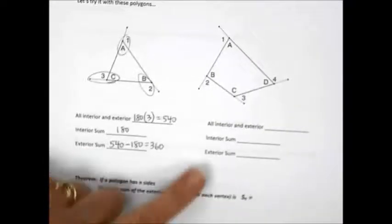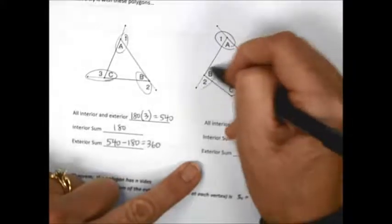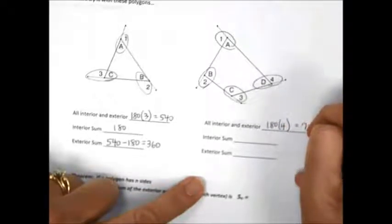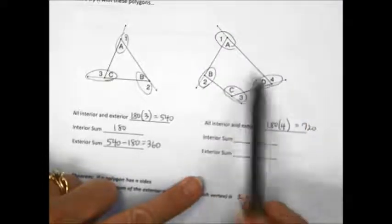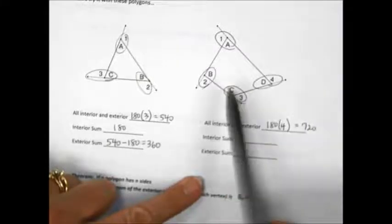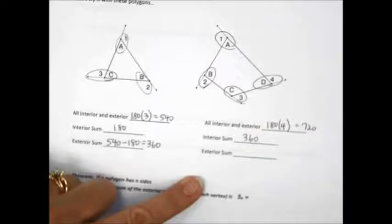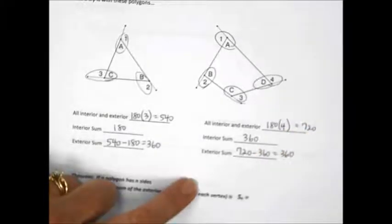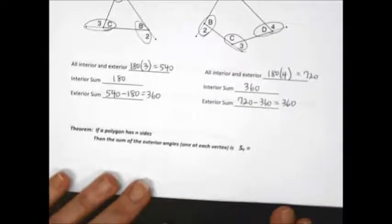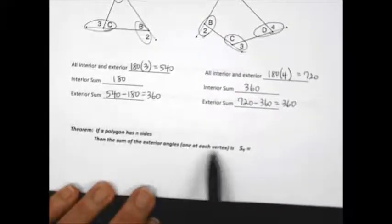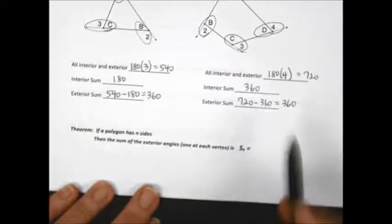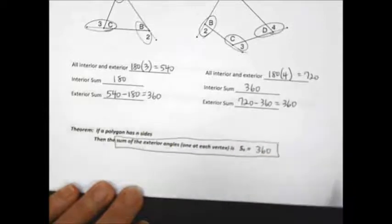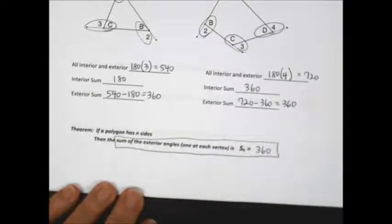Let's try a quadrilateral. Interior and exterior gives 180 at each of four pairs — so 180 times 4 is 720. The interior sum of a quadrilateral is 360. So 720 minus 360 is 360. The sum of exterior angles is simply 360. It doesn't matter how many sides the polygon has — the exterior angles always add up to 360.